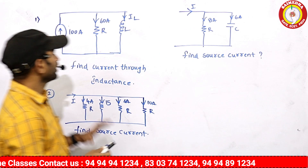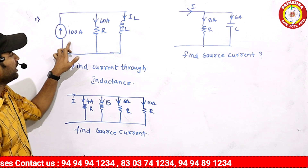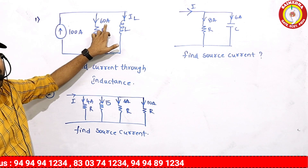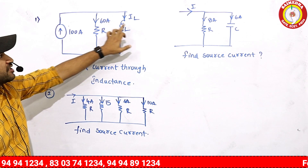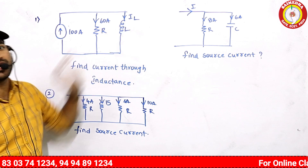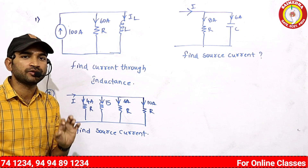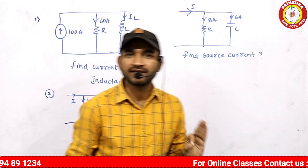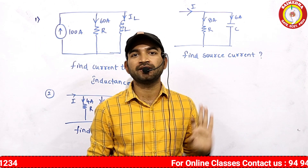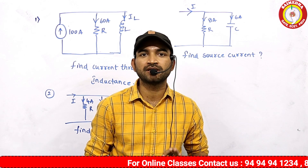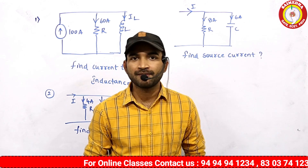Let's start here. Let's try 100A to 60A. By mistake, we can say 60A to 40A. By applying the KCL, we don't satisfy. So, we apply the KCL here.